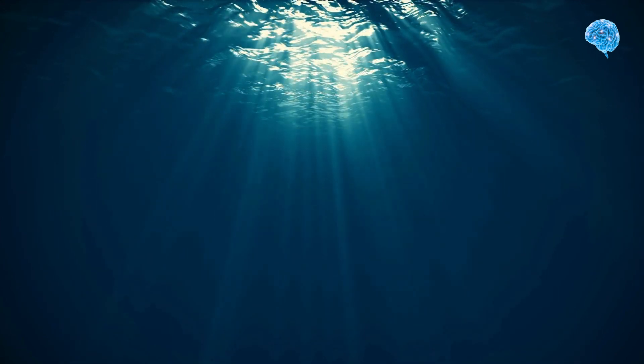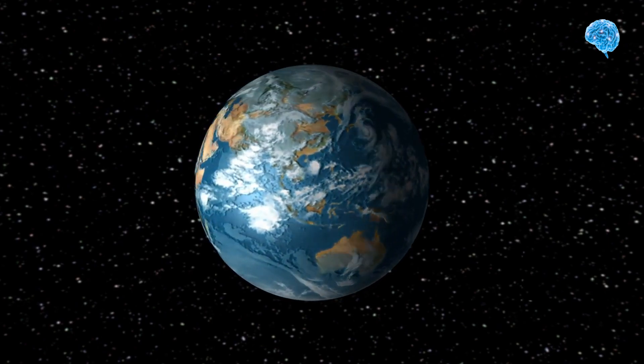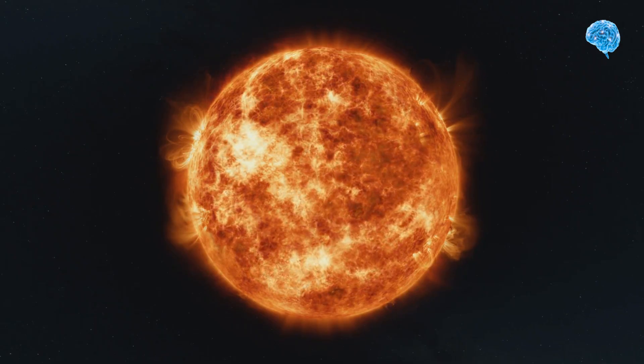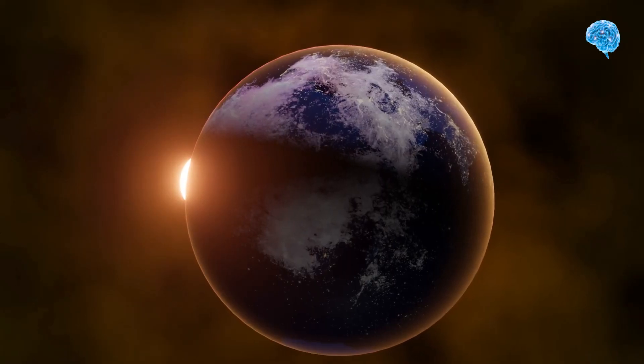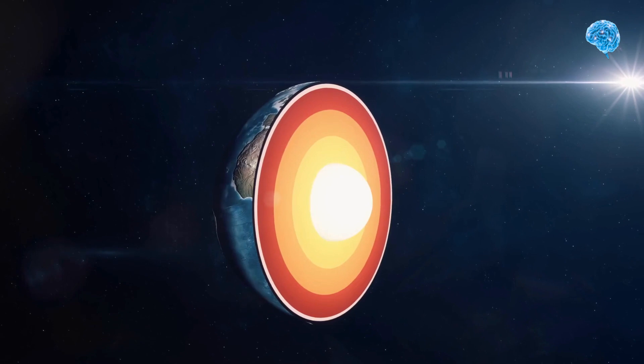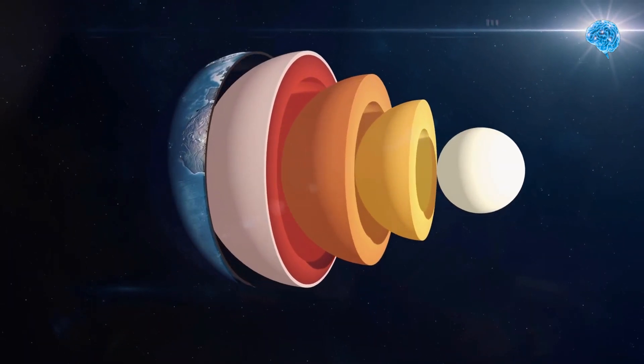Scientists discover a massive ocean under the Earth's surface that surpasses all the seas above land. It's surprising to learn that water envelops 71% of Earth's surface. Okay, so maybe that one was a little too easy. But did you also know that there is a massive water reserve three times greater than the planet's surface seas hidden under the Earth's crust?